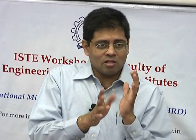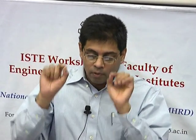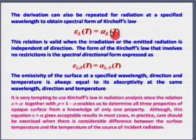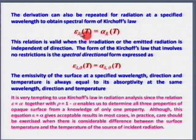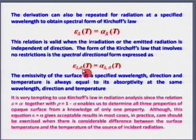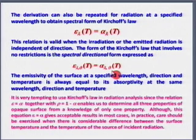As long as temperatures are the same, we can do the same derivation for directional or spectral quantities: epsilon-lambda equals alpha-lambda, and in the most general case, spectral directional emissivity equals spectral directional absorptivity. Please remember: epsilon is related to my surface which is emitting; alpha is related to the surface receiving. This is why alpha and epsilon do not belong to the same surface.